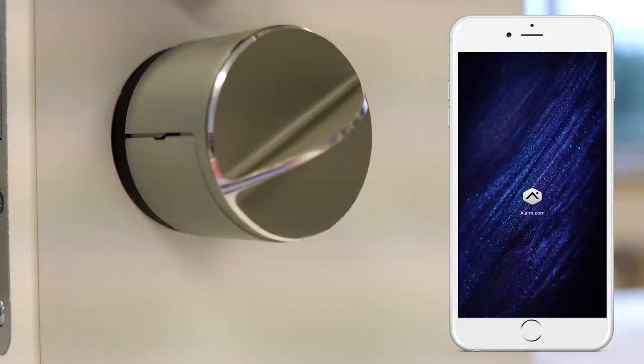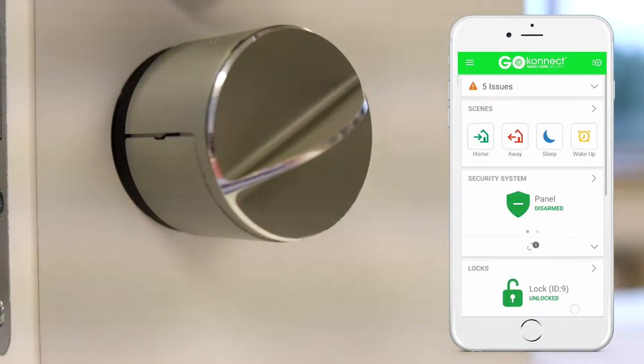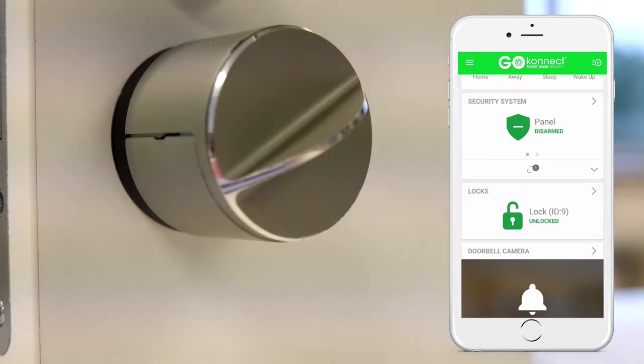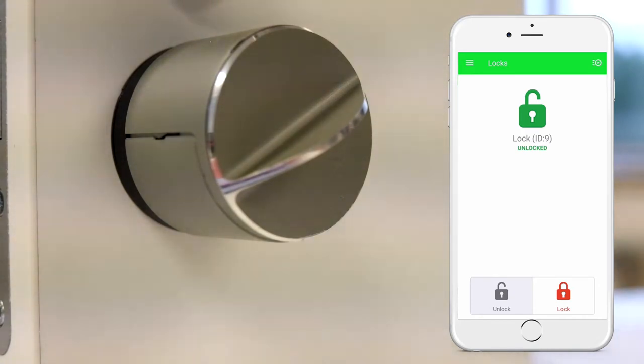To use your smart lock, open your alarm.com app and scroll to your locks. It might be out of sync, so even if your door is locked, it might show up as unlocked or the other way around. To correct this, just tap here and it'll give you an update on the current state of the lock.